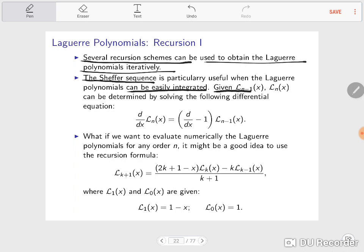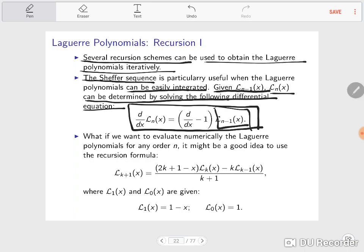Given a Laguerre polynomial L_{n-1}(x), L_n(x) can be determined by solving the following differential equation. This differential equation is a recursive differential equation. If you integrate both sides, once you know the Laguerre polynomial to a lower order, the subsequent order can be determined just by integration.